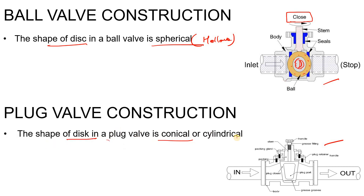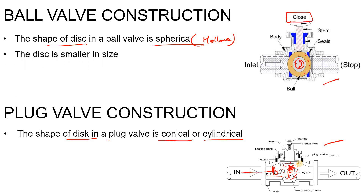In the case of the plug valve, the disc will be in a conical or cylindrical shape. Here you can see this is my plug valve. Right now the plug valve is closed because the hollow plug is in the front view. When it would be open, the solid portion would be at the front view.